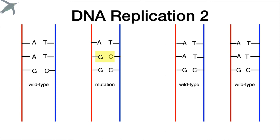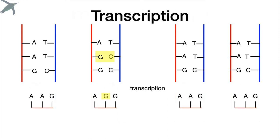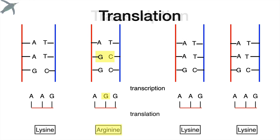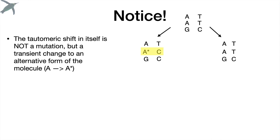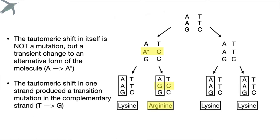Now we're going to replicate again. The key thing to notice is that adenine reverts back to the amino form — the more stable, dominant form. But this cytosine stays. It has changed. That's a mutation caused by the previous tautomeric shift of its partner. After filling in the rest, we've got one mutant copy; the rest are all wild type. When we transcribe and translate, instead of lysine, because of that tautomeric shift, we get arginine instead. So a tautomeric shift is not a mutation in itself — it's just a change from the common to the rare form — but the tautomeric shift in adenine produced a mutation in the complementary strand, changing the amino acid from lysine to arginine.